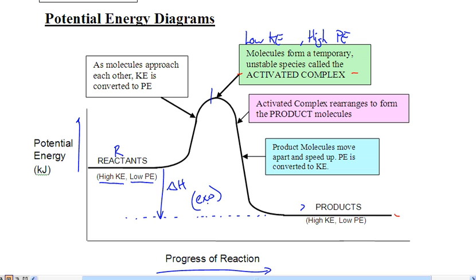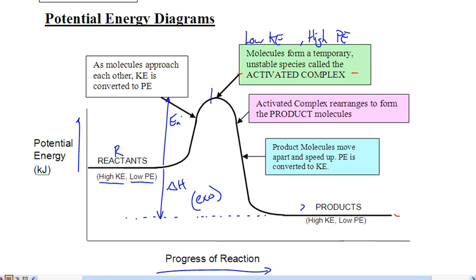One thing that's different is this bump in the middle — this bump is what we are going to study in this section. The reactants have to collide with energy that equals or is greater than the height of that bump. This height is called EA, which stands for activation energy.